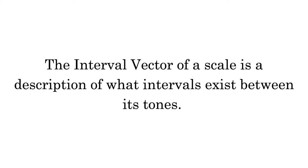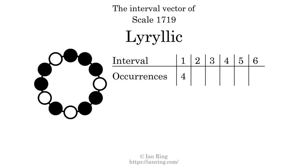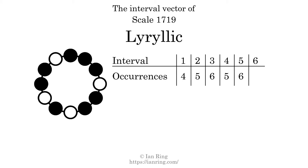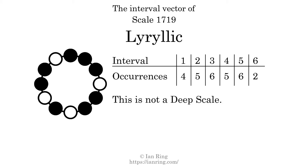The interval vector of a scale is a description of what intervals exist between its tones. There are 4 intervals with the size of 1 semitone, 5 intervals with the size of 2 semitones, 6 intervals with the size of 3 semitones, 5 intervals with the size of 4 semitones, 6 intervals with the size of 5 semitones, and 2 intervals with the size of 6 semitones. Each interval does not appear in this scale a unique number of times, so this is not a deep scale.